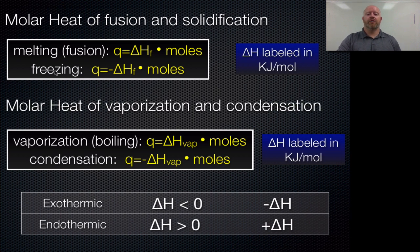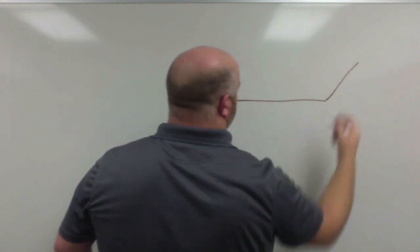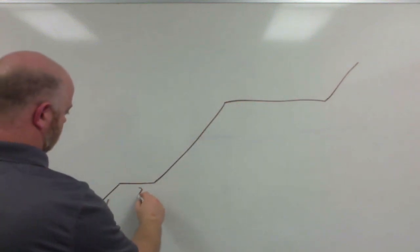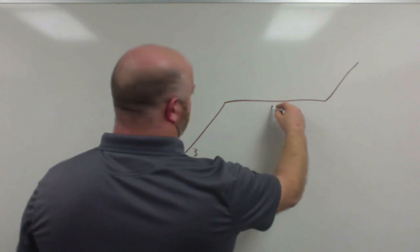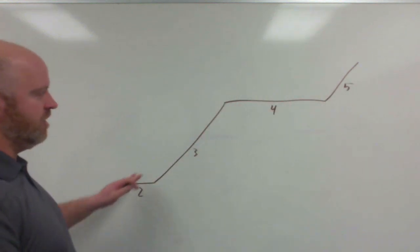When we're dealing with the heating curve, we know that we can solve for energy change along that heating curve, and I'm going to draw it up on the board for you guys now. In our normal heating curve, we have one, two, three, four, five different legs of our heating curve.